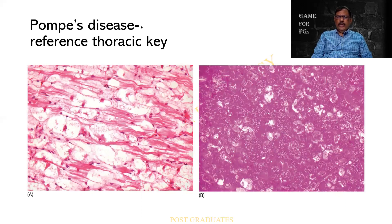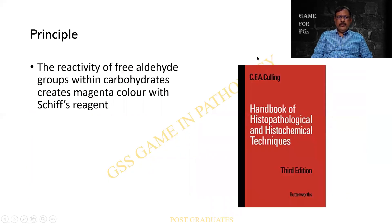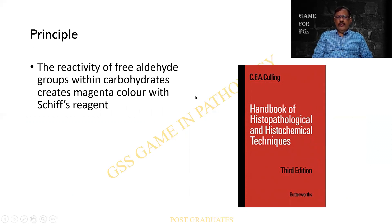I have been telling you about Pompe's disease — this is the myocardium showing a lot of vacuolation, and then a PAS stain is done and the entire thing is taking up a magenta colour. So this is again the principle being repeated: the reactivity of the free aldehyde groups with the carbohydrates creates a magenta colour with the Schiff's reagent. Kindly by-heart this word — this is like a Thirukkural for you, a two-line statement that gives volumes of meaning.